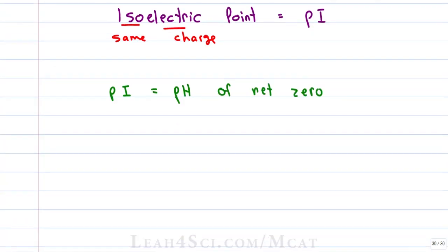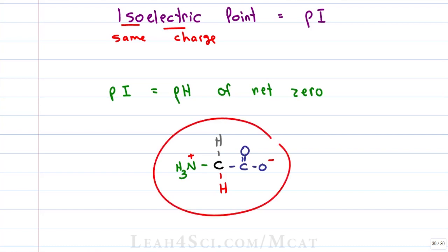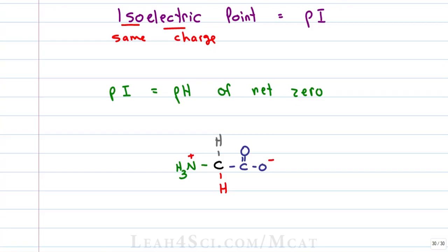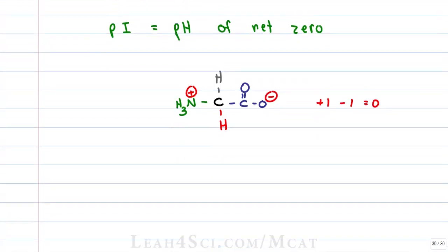In the last video we saw how to find the charge for glycine at different pH values, and called this structure — where we have a plus and minus on the same molecule — a zwitterion. Notice that in this form we don't have no charge, but rather we have a charge of plus one and minus one that cancel to give zero. The PI is the pH at which we have a net charge of zero.